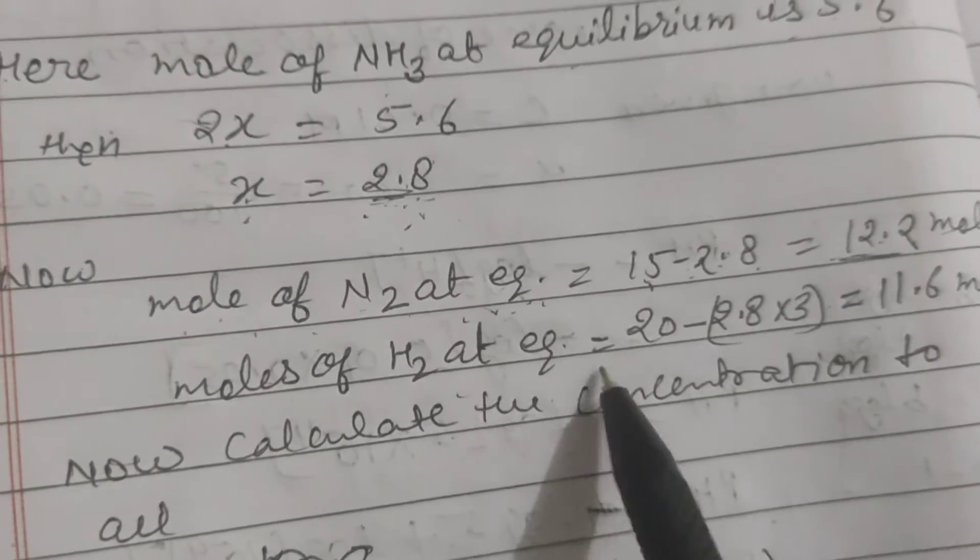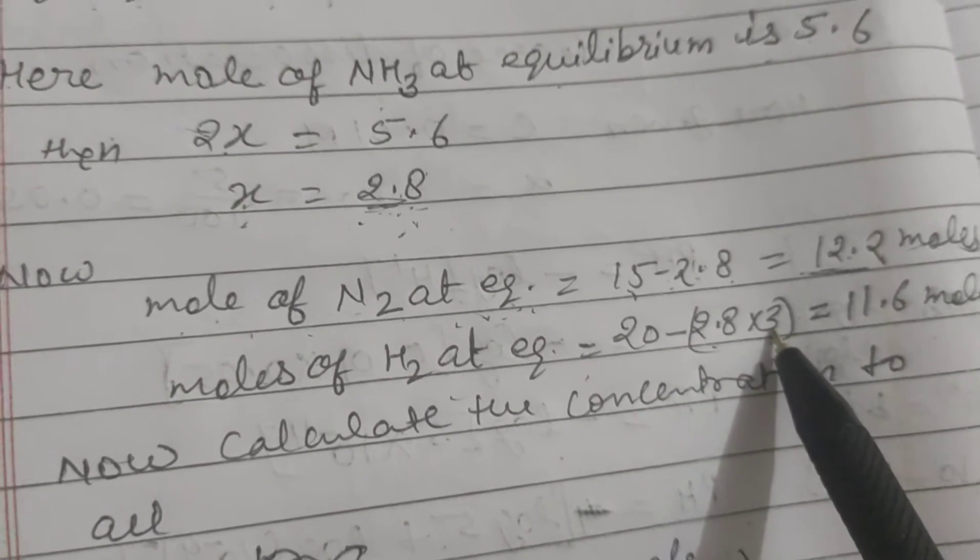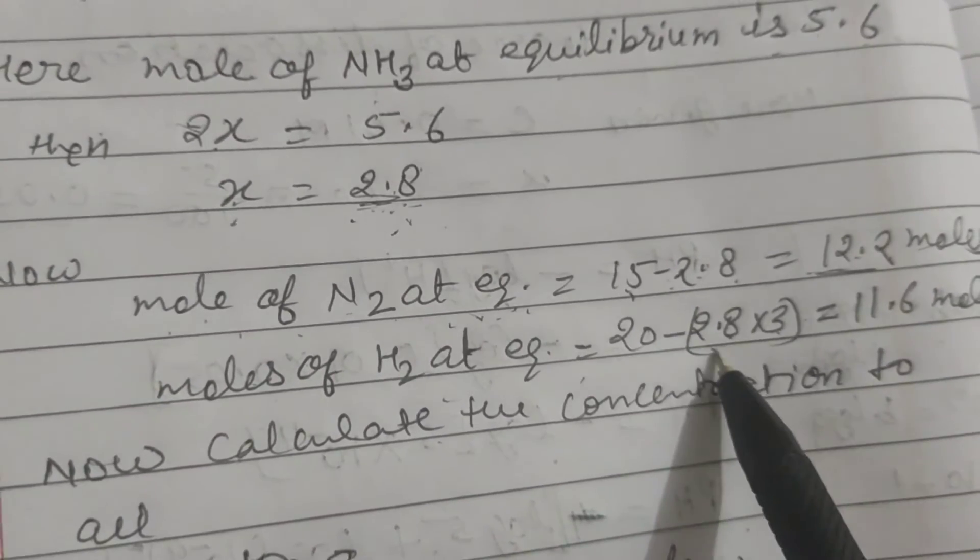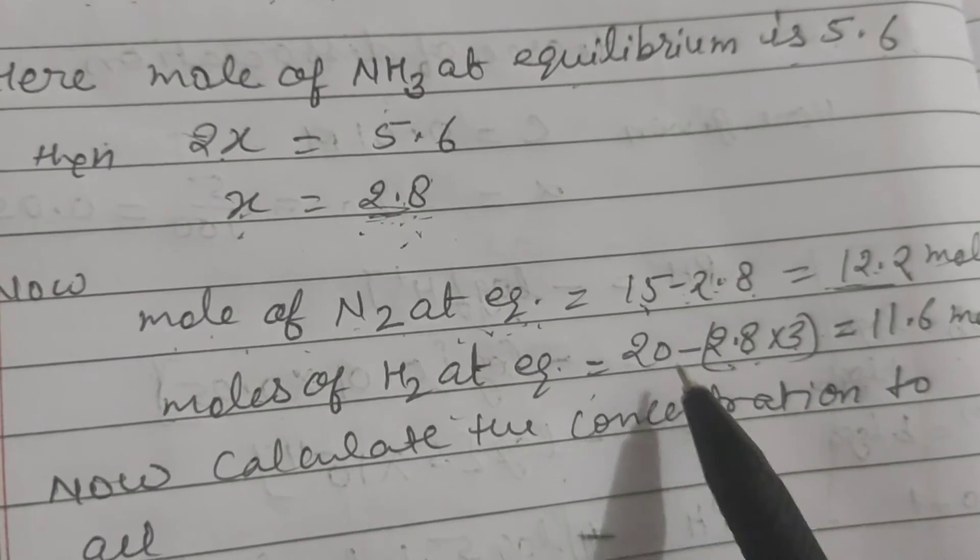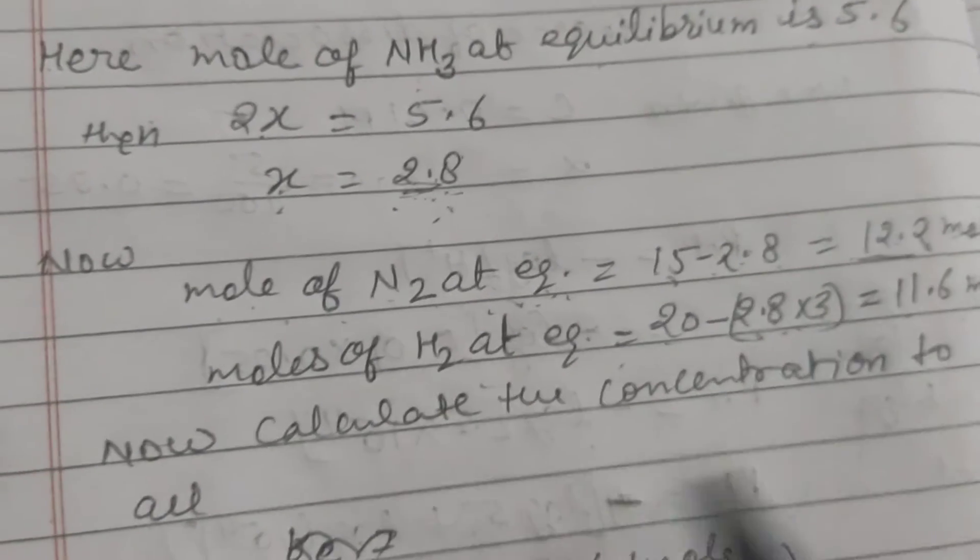Moles of hydrogen at equilibrium: there is 3 moles of hydrogen used in this case, then it will be 11.6 after calculation.